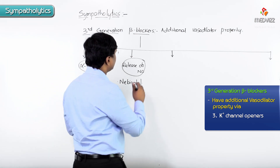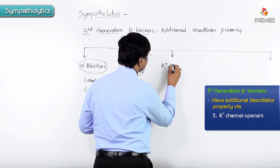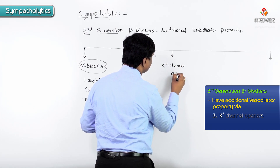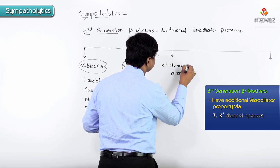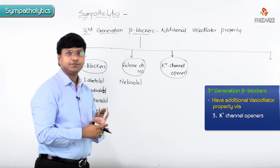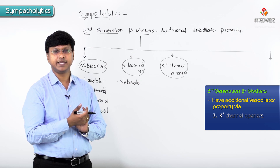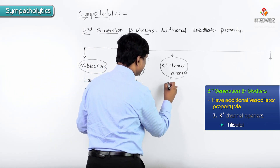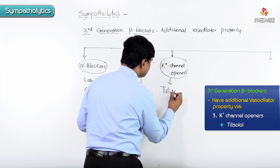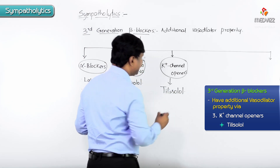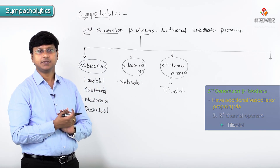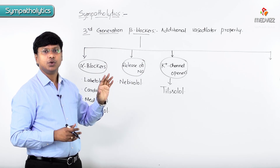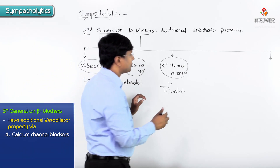The next group is third generation beta blockers which are potassium channel openers. The drug under this group is tilisolol.